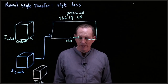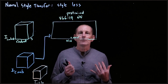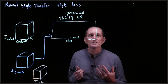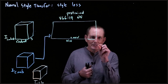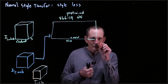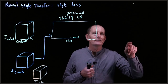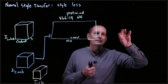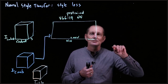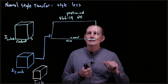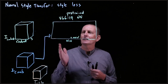Let's look at style and how we can deal with it. Style is hard to define — it's a bunch of things: the colors used, small details like tiny brush strokes, or larger elements like the swirls in Van Gogh. It's unclear where to look in a network if you want to extract style information.